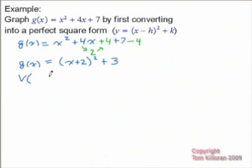So right off the bat, we know that the vertex is going to be negative 2 from here and positive 3 from there.